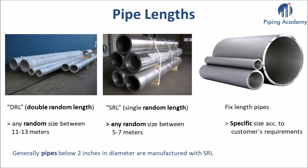Then there is SRL, which means single random length. A single random length can be a pipe of any size between 5 and 7 meters. And finally, there are fixed length pieces — a fixed length pipe is a specific size according to the customer's requirements.